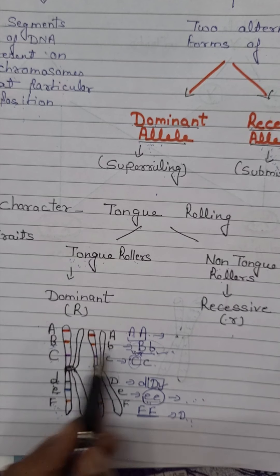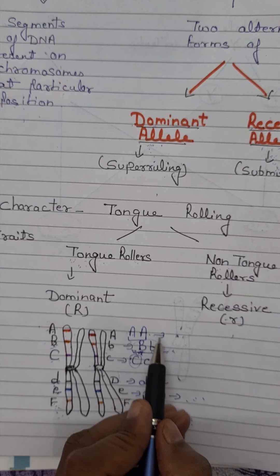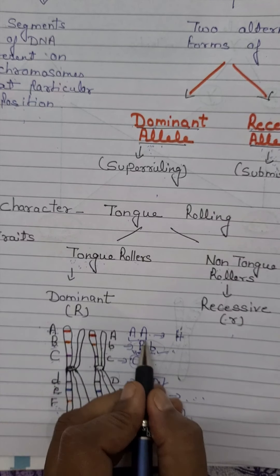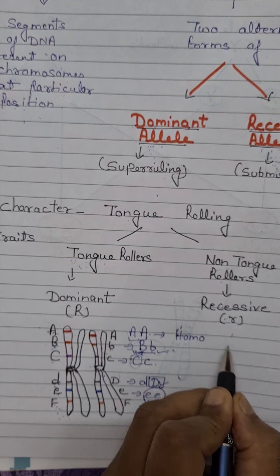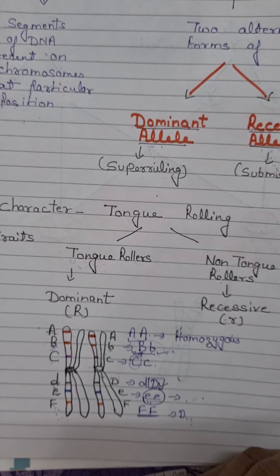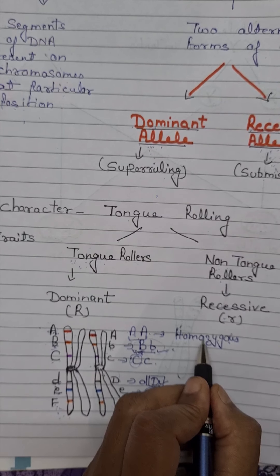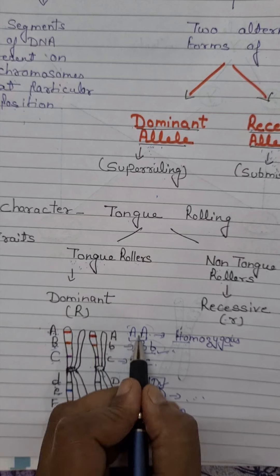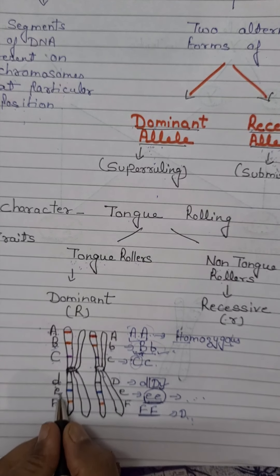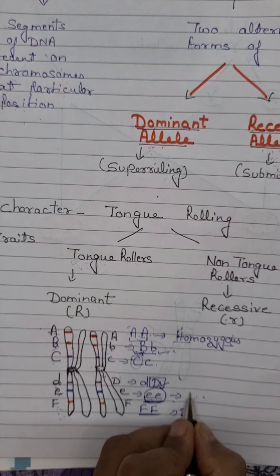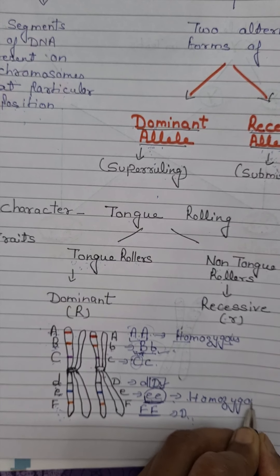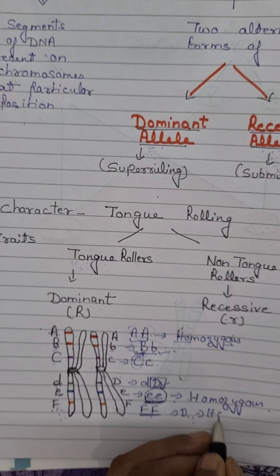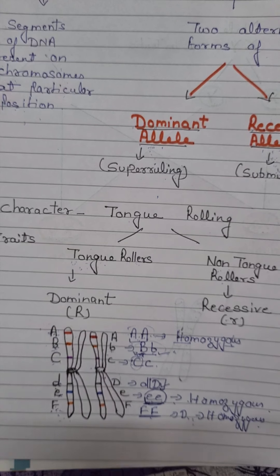In some characteristics, both alleles are of the same type. When both alleles representing the same gene are of the same type — either both dominant or both recessive — that condition is called homozygous. The 1st characteristic has both dominant alleles, so it is homozygous. The 5th characteristic is controlled by 2 recessive alleles, also representing a homozygous condition. Similarly, the 6th characteristic is controlled by 2 homozygous alleles, also representing homozygous condition.